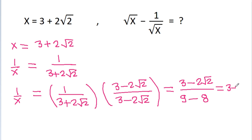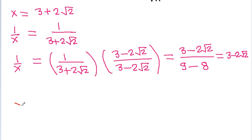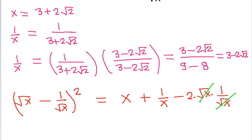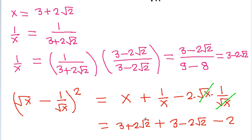Now, root x minus 1 by root x whole squared will be equal to root x squared, which is x, plus 1 by root x squared, which is 1 by x, minus 2 times root x times 1 by root x. Root x cancels, so it becomes x plus 1 by x minus 2. x is equal to 3 plus 2 root 2 and 1 by x is equal to 3 minus 2 root 2.